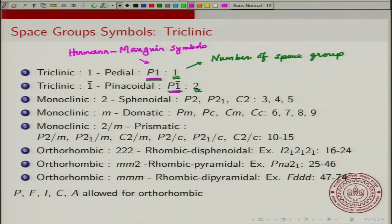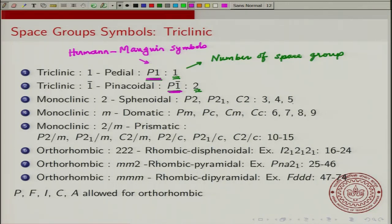In the monoclinic sphenoidal crystal class, there are actually three different space groups that are possible. You can have P2 — a primitive 2 that only has the twofold axis. You can have P2₁, where the twofold axis is actually a screw axis of rotation. Then you could have C2, which is C-centered. These are numbered 3, 4, and 5.